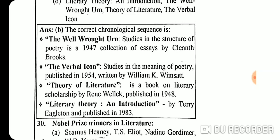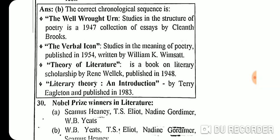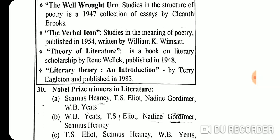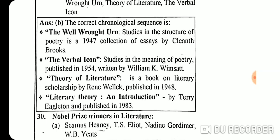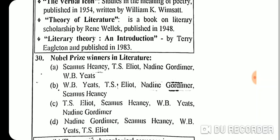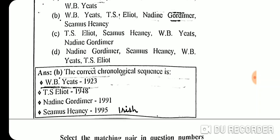Question 29 chronological sequence of critical works: 'The Well Wrought Urn' by Cleanth Brooks (1947), 'Theory of Literature' by Wellek and Warren (1948), 'The Verbal Icon' by William K. Wimsatt (1954), 'Literary Theory: An Introduction' by Terry Eagleton (1983).